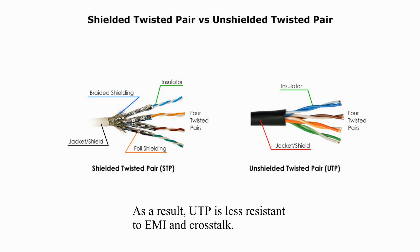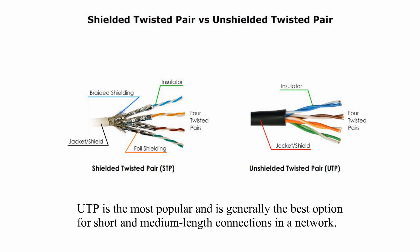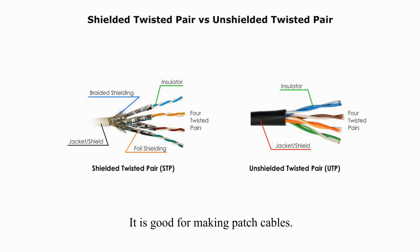As a result, UTP is less resistant to EMI and crosstalk. UTP is the most popular and generally the best option for short and mid-length connections in the network. It is good for making patch cables.